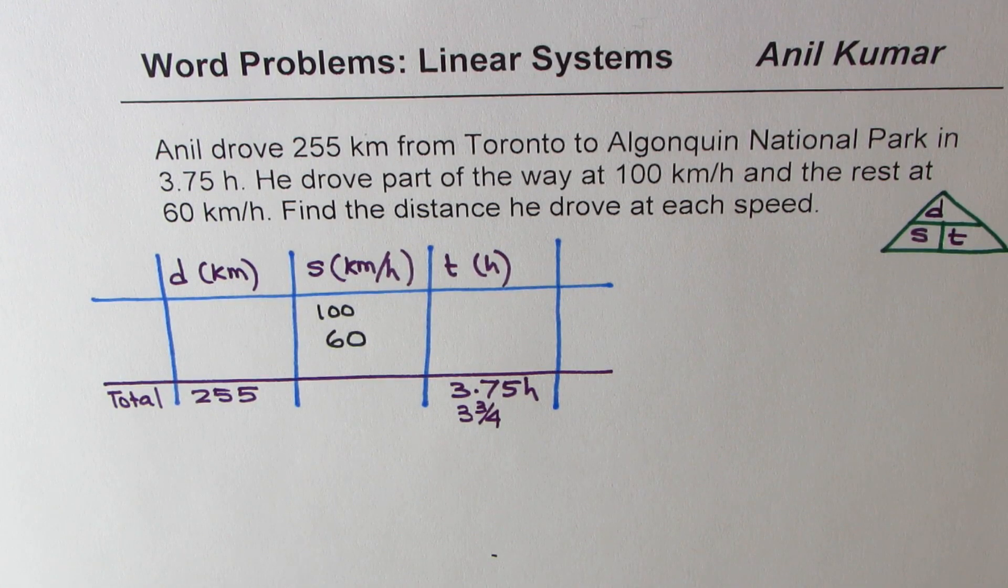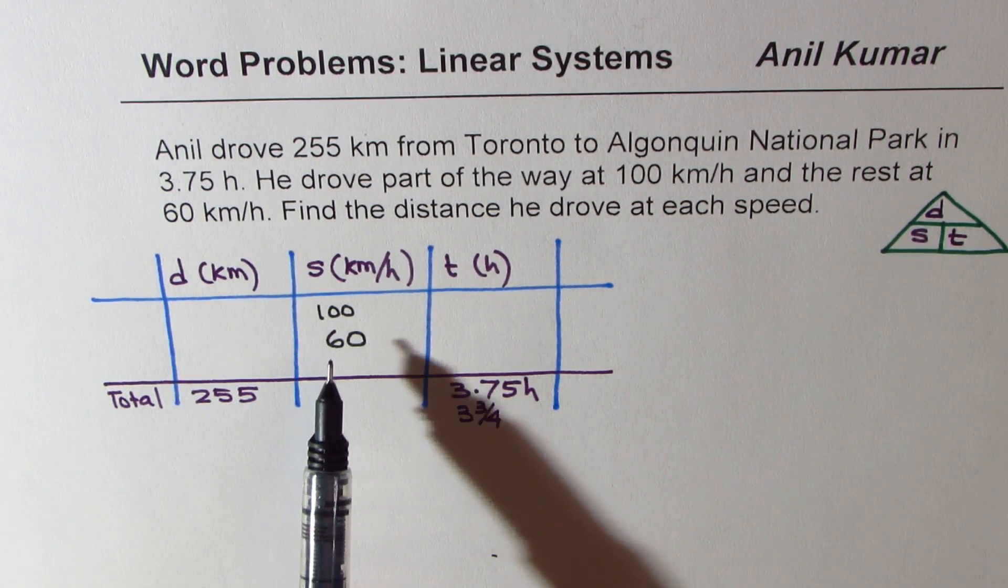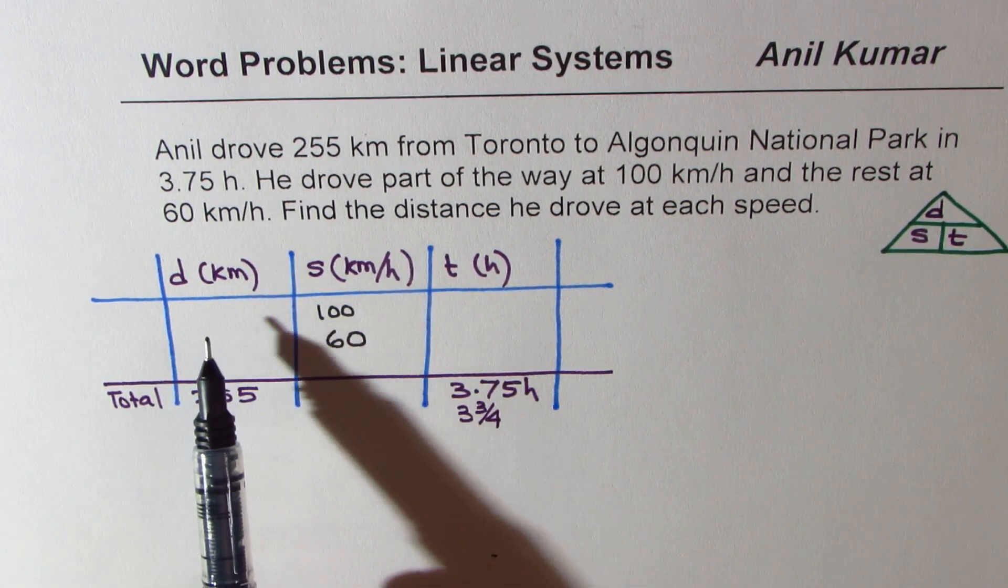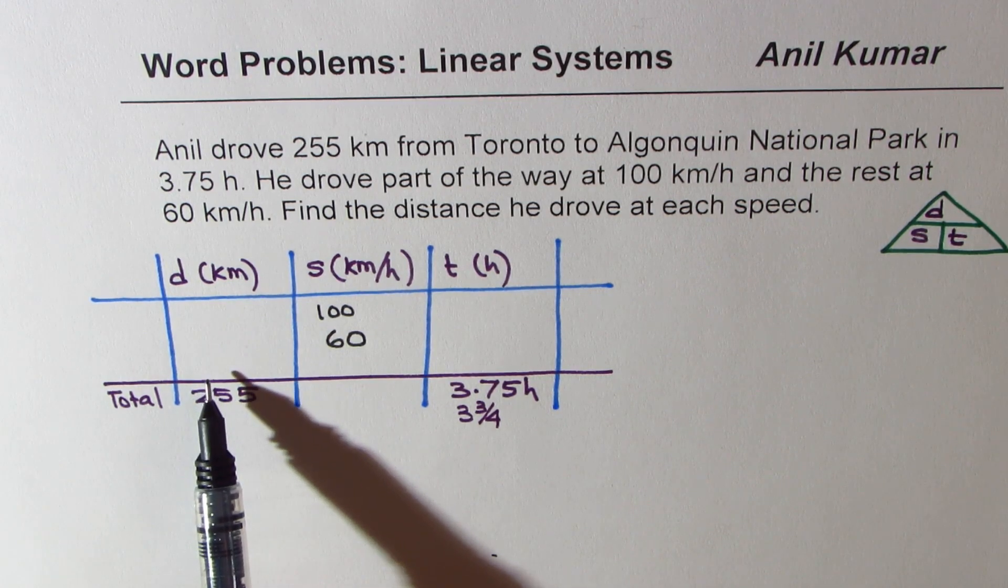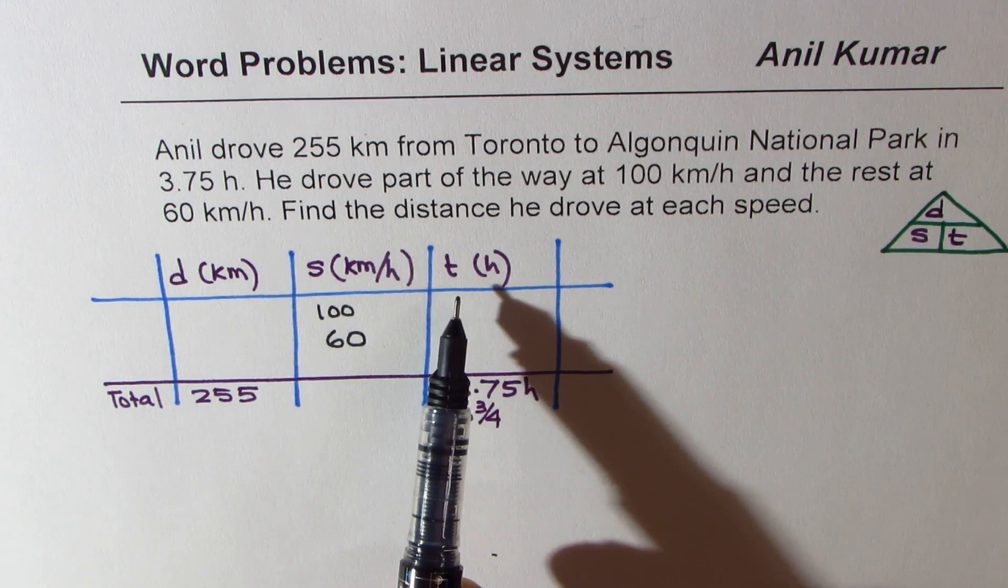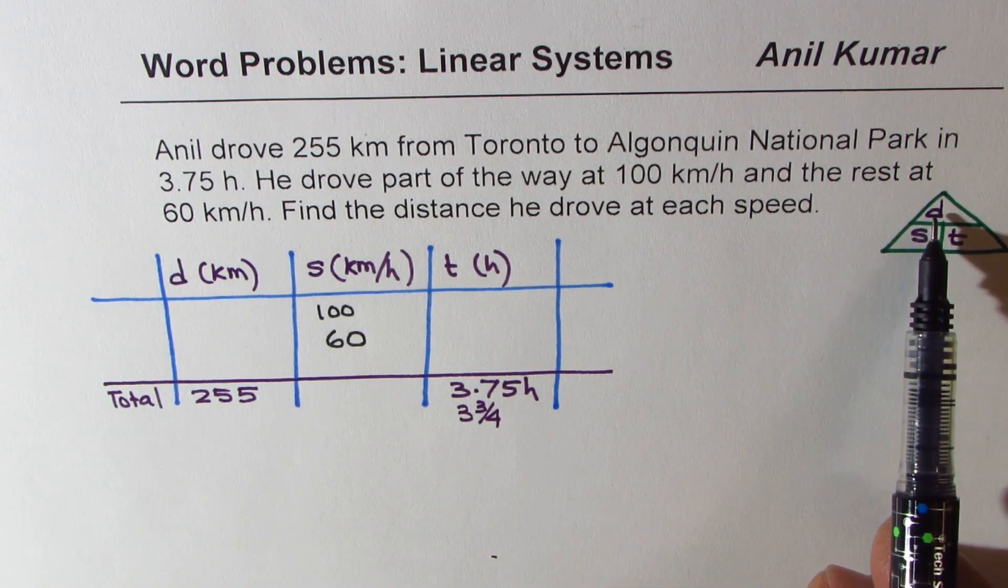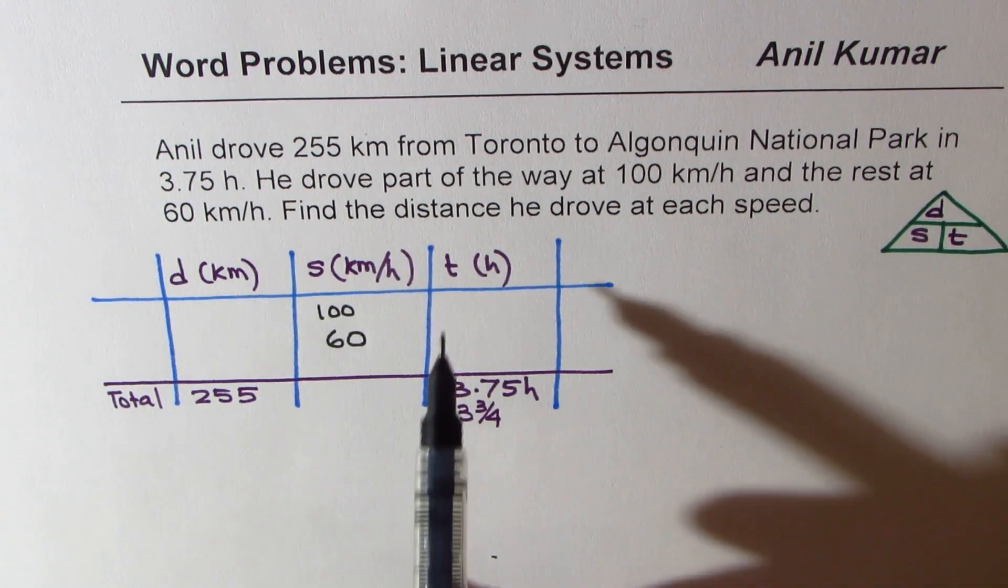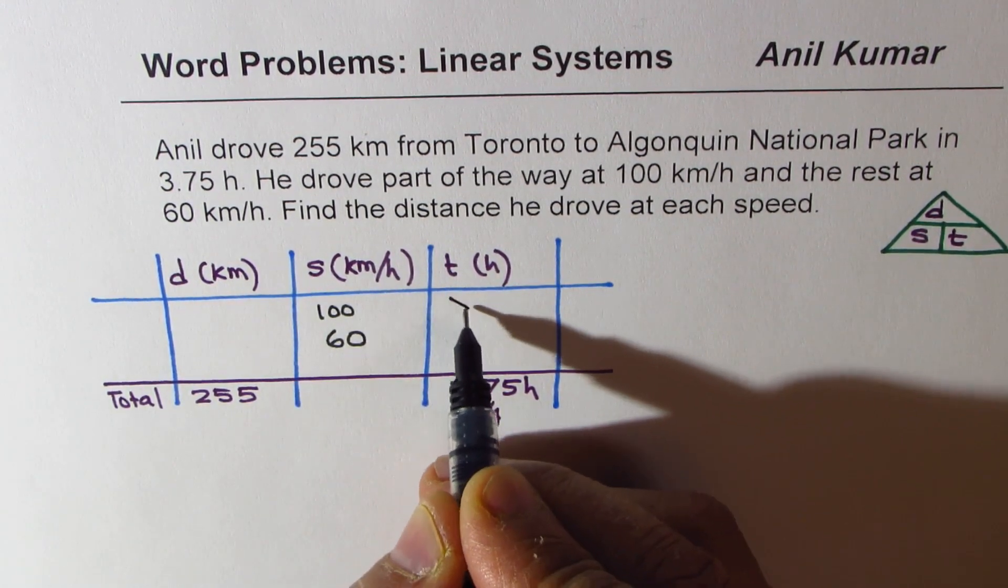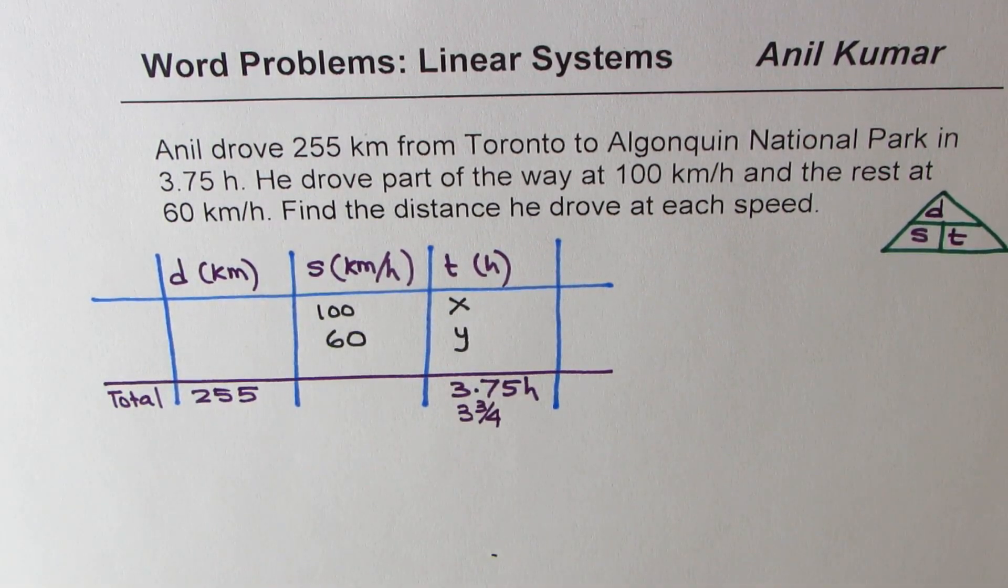Now the idea here is how to choose my variables. If I choose variables x and y for distance, in that case I get time as distance divided by speed. So what I do here is I choose a variable x and y for time, not for distance. Do you see the trick involved?